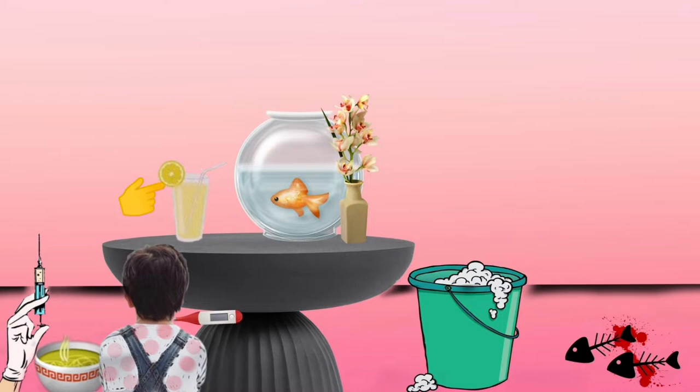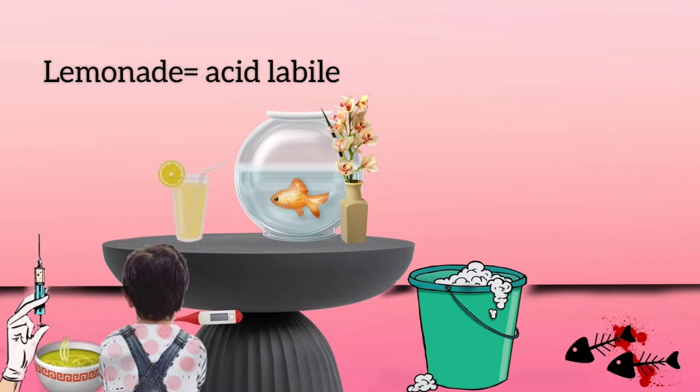You can see a lemonade on the table. Since lemon is acidic, it tells us that Salmonella is acid labile — hence it is easily destroyed by the gastric acids in the stomach. Therefore, a high dose of Salmonella is needed to produce infection.